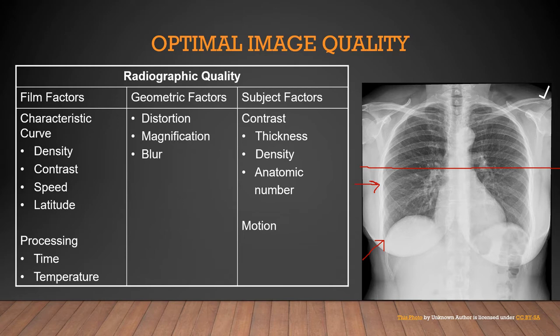I also have a pet peeve about x-ray markers. I think this is a Picasso x-ray, so the x-ray marker should be parallel to the image receptor - it shouldn't be cockeyed. We want to have a beautiful x-ray. I also want to make sure that the person who x-rayed the patient has their initials on that particular image. When looking at optimal radiographic image quality, we want to look at characteristics including spatial resolution, contrast resolution, noise, and artifacts.